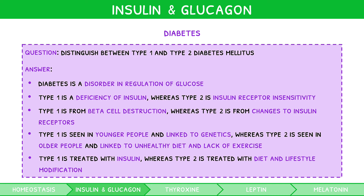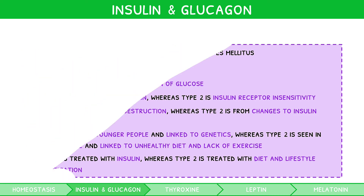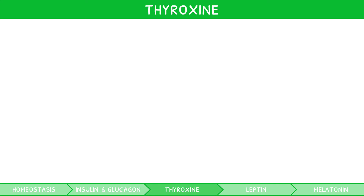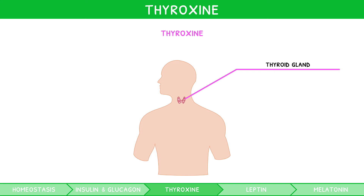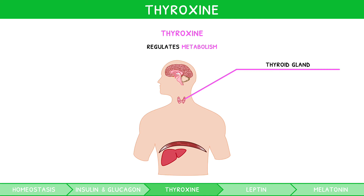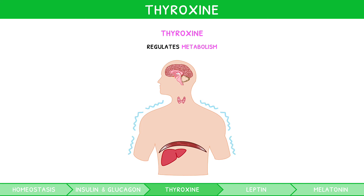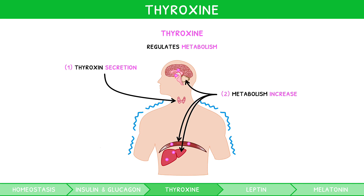Along with glucose, our body must also balance its metabolic rate. This is done by thyroxin, a hormone secreted by the thyroid gland found in the midline of the neck. It binds to most cells in the body, such as liver, muscle and brain cells, to regulate metabolism, i.e. respiration. As covered previously, respiration produces heat as a waste product, so the thyroid has an influence on our body temperature. For example, if you become cold, the thyroid secretes more thyroxin, increasing metabolism and so raising body temperature.